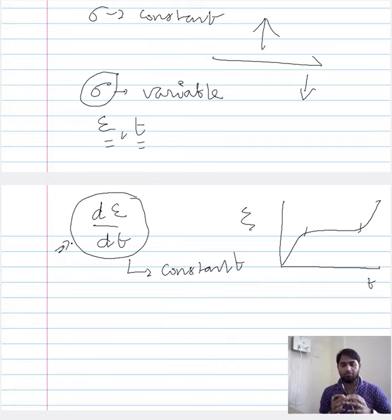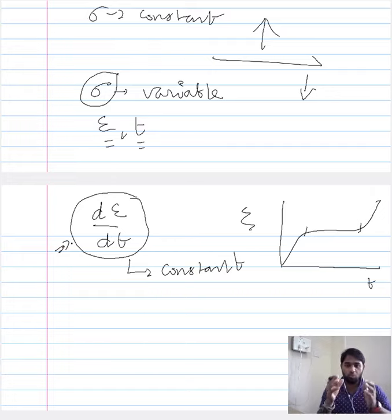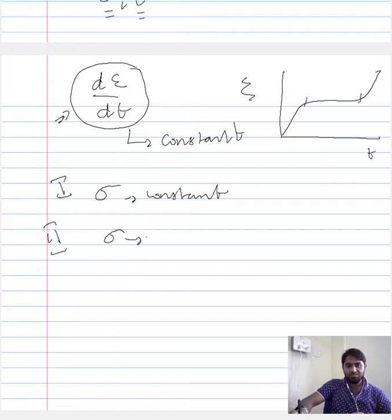What we will be doing now is varying the mechanical condition while ensuring that the strain rate or creep rate is constant throughout the evolution. This is the new condition under which we want to study creep behavior. So far we studied Case 1, where stress is constant. Now in Case 2, the mechanical condition imposed is a variable and the constant is the creep rate.